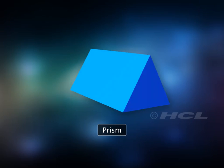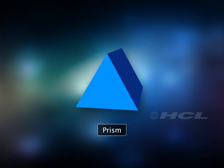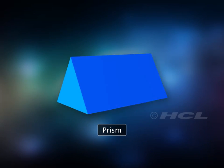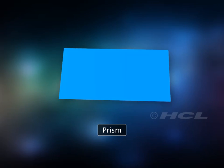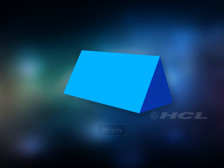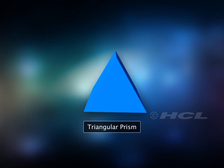A prism is a solid whose ends are any congruent polygons. The shape of the ends gives the prism a name. For example, this is a triangular prism because it has triangular ends.